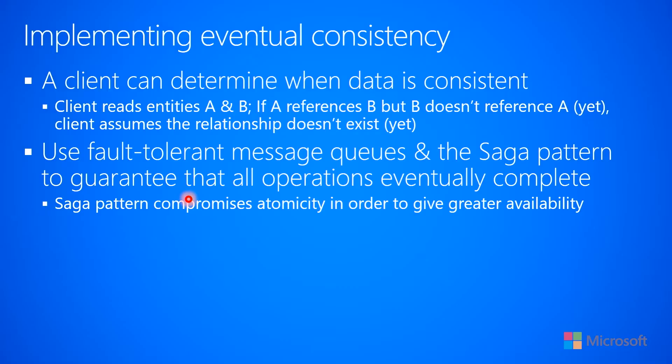A client — a customer — comes to your website and says, 'I want to see all of the orders I've placed.' What you could do is have the client read both entities: the customer information and the order information. It could be that the order information is not there yet, but the customer information is. So if the customer record references an order but you go to the orders table and it's not there yet, you could say to the customer, 'We're still processing that order, I can't show you the information about it right now.'